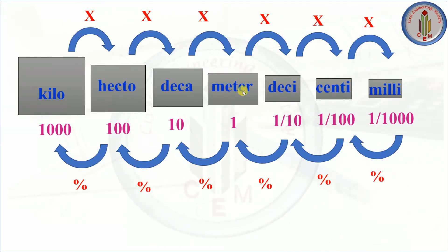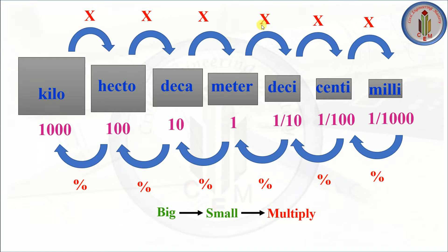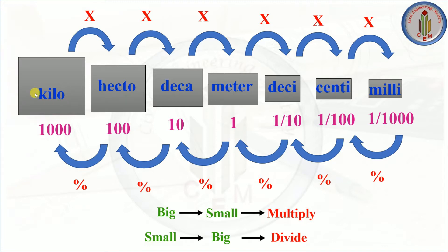1 meter equals 10 decimeters, 1 meter equals 100 centimeters, and 1 meter equals 1000 millimeters. For conversion: when converting from a bigger unit to a smaller unit, you multiply; when converting from a smaller unit to a bigger unit, you divide. For example, decimeter to meter means divide; kilometer to hectometer means multiply. Always remember which is bigger and which is smaller.